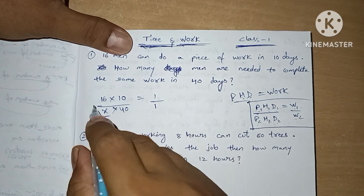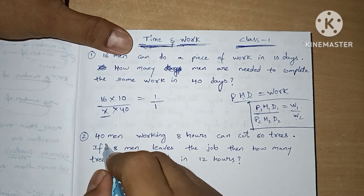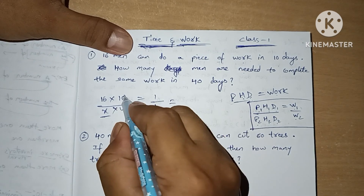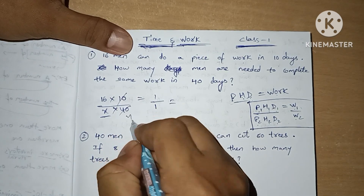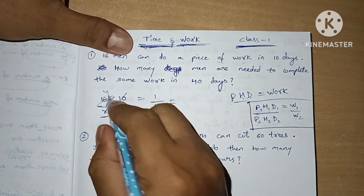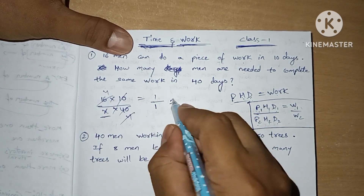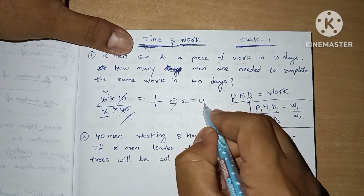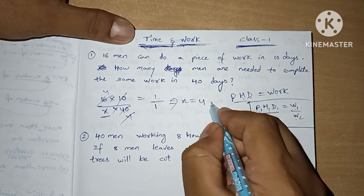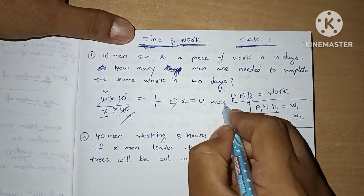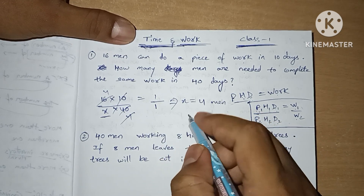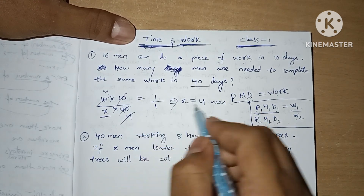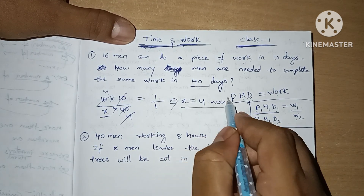We use the same concept here. 4 times 4, so X value is 4. 4 men are required to complete the work in 40 days. Our answer is 4 men.